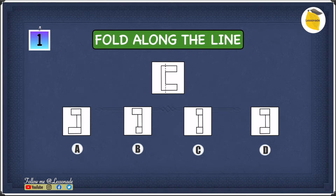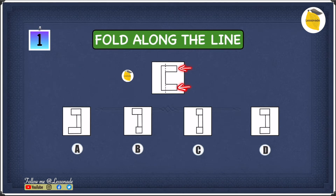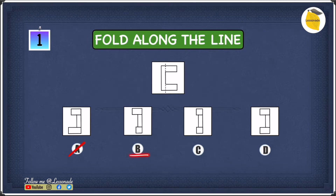Since we now know the direction in which the paper has been folded, we can start eliminating options. If you look at both flaps, they're both the same size and the same length. So if we find an option where the flaps are different lengths, we cross it off. In A, the bottom flap is a bit longer than the top one, so they're different lengths — we can cross off A.